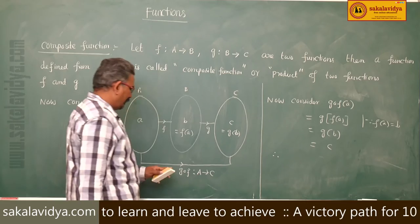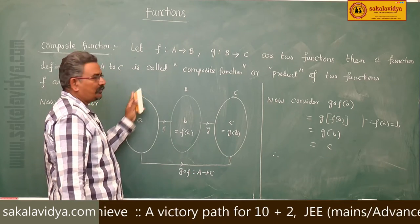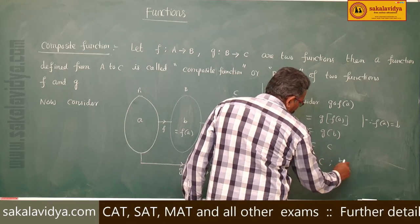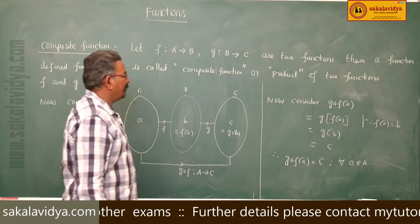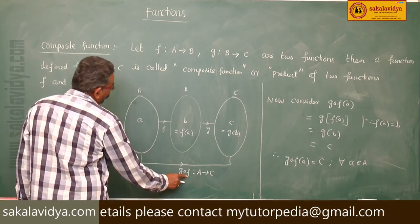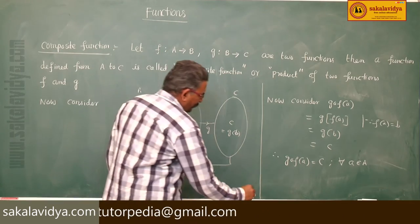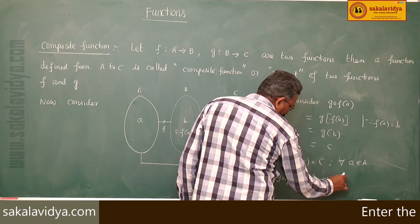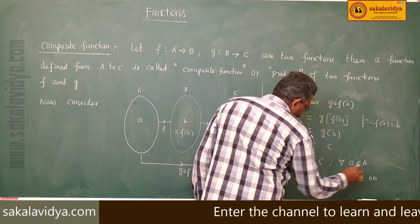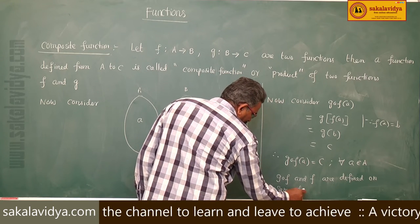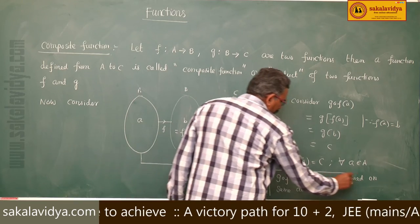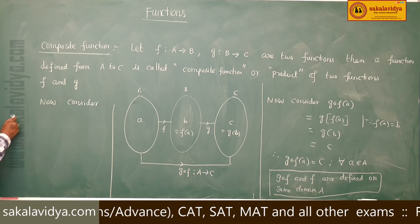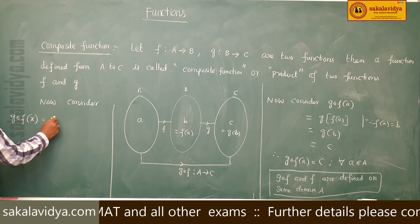Therefore, if g∘f from A to C is a composite function, then g∘f(a) = c for every a belonging to A. This means g∘f and f have the same domain A. So hereafter, g∘f(x) means g(f(x)).